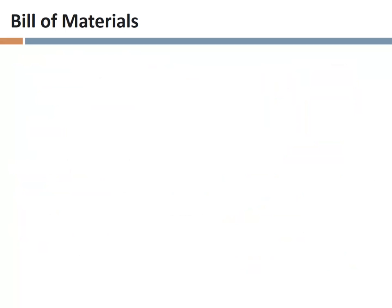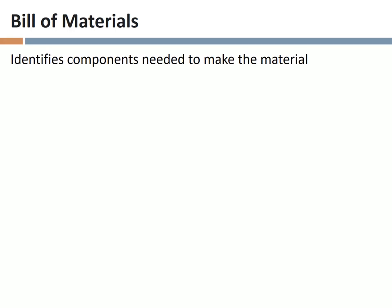New item, at least in terms of our formal discussion: the bill of materials. A bill of materials identifies the components needed to make a particular material. You can think of this almost like a recipe, but it's distinct from a recipe in one regard. A recipe normally lists the ingredients and gives you the steps, but a bill of material essentially only lists the ingredients — it is just a list of the individual components needed to make the material, and does not give the actual instructions. That's a different master data record.